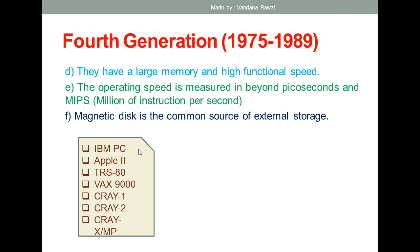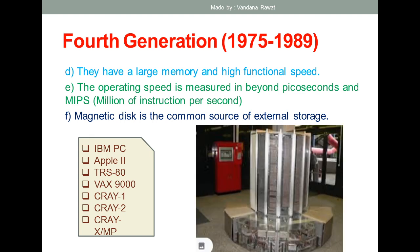Some examples of fourth generation computers: a number of PCs were developed by IBM in this generation. Apple also developed computers in this generation. TRS, VAX 9000, Cray-1, Cray-2, and CRAY X-MP were also there. These are some of the computers developed during the fourth generation. Any one of these computers can be mentioned if asked about a fourth generation example.